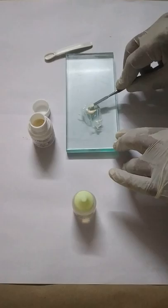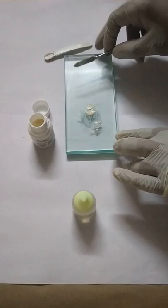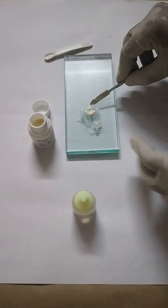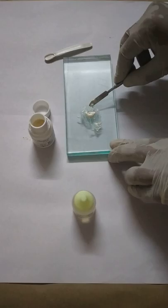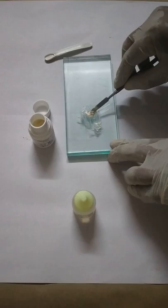Another method of using zinc phosphate cement manipulation is by using a frozen glass slab method. Frozen glass slab method is used to increase the setting time, increase the working time, and to incorporate more powder. That means you increase the strength, and it is used for cementing orthodontic brackets and other cementation.